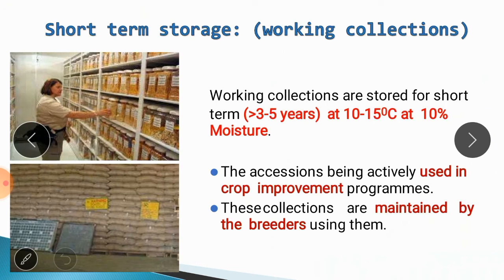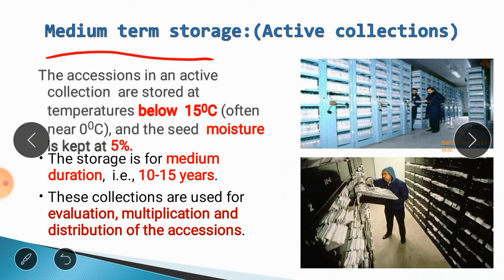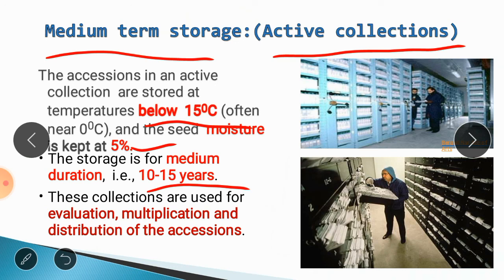Short-term storage or working collection can store seeds for up to 3 to 5 years at 10 to 15 degrees Celsius at 10 percent moisture level. This material is generally used for crop improvement programs or for breeding purposes. Medium-term storage or active collection: accessions are stored at temperature below 15 degrees Celsius and moisture content up to 5 percent. Storage is performed for 10 to 15 years, and this material can be used for evaluation, multiplication, and distribution.